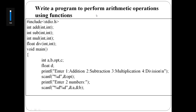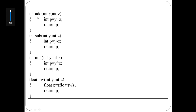Next: write a program to perform arithmetic operations using functions. The arithmetic operations are addition, subtraction, multiplication, and division — four functions are defined. For addition, function name is 'add', two numbers are arguments. The two numbers are added and the result is returned. The return type is int.